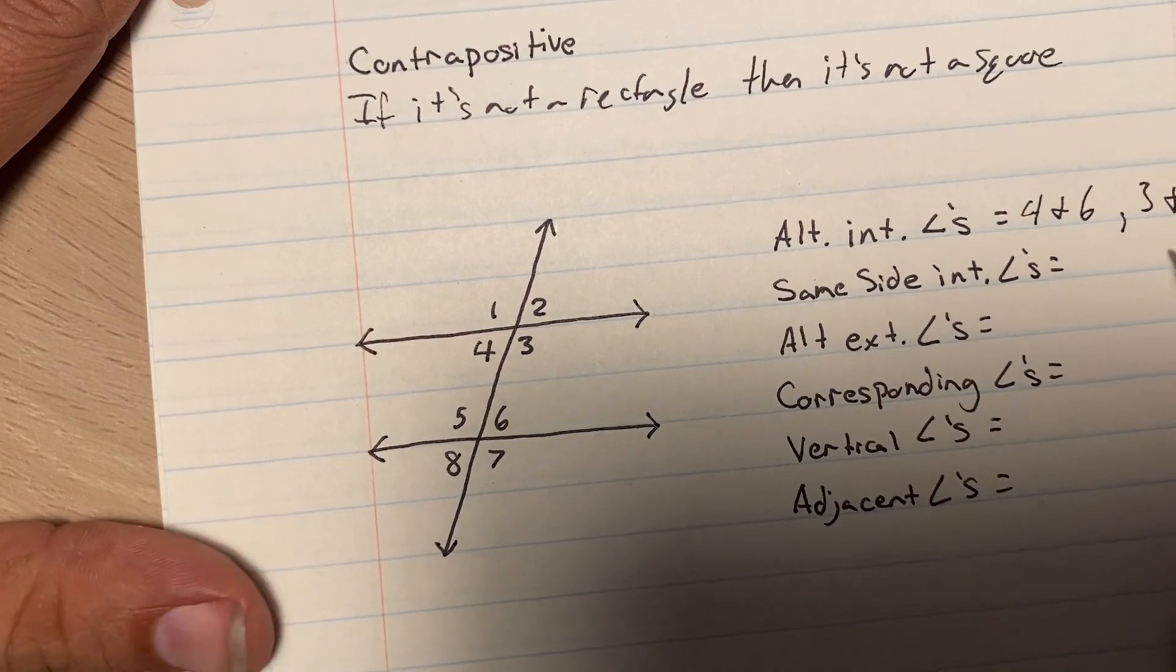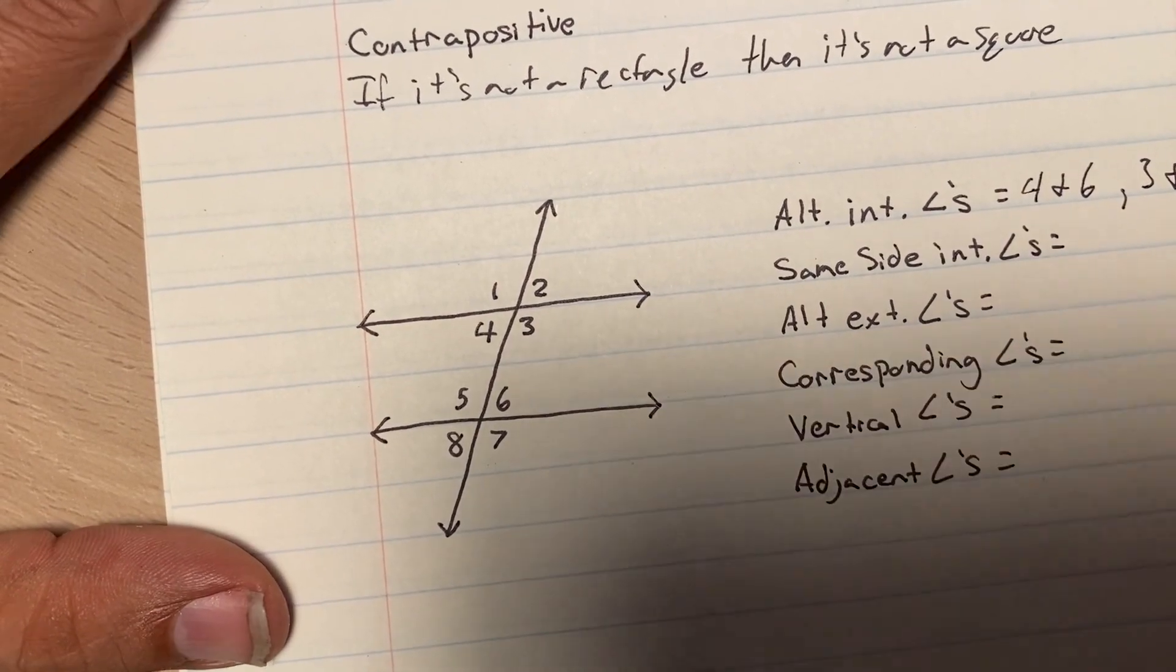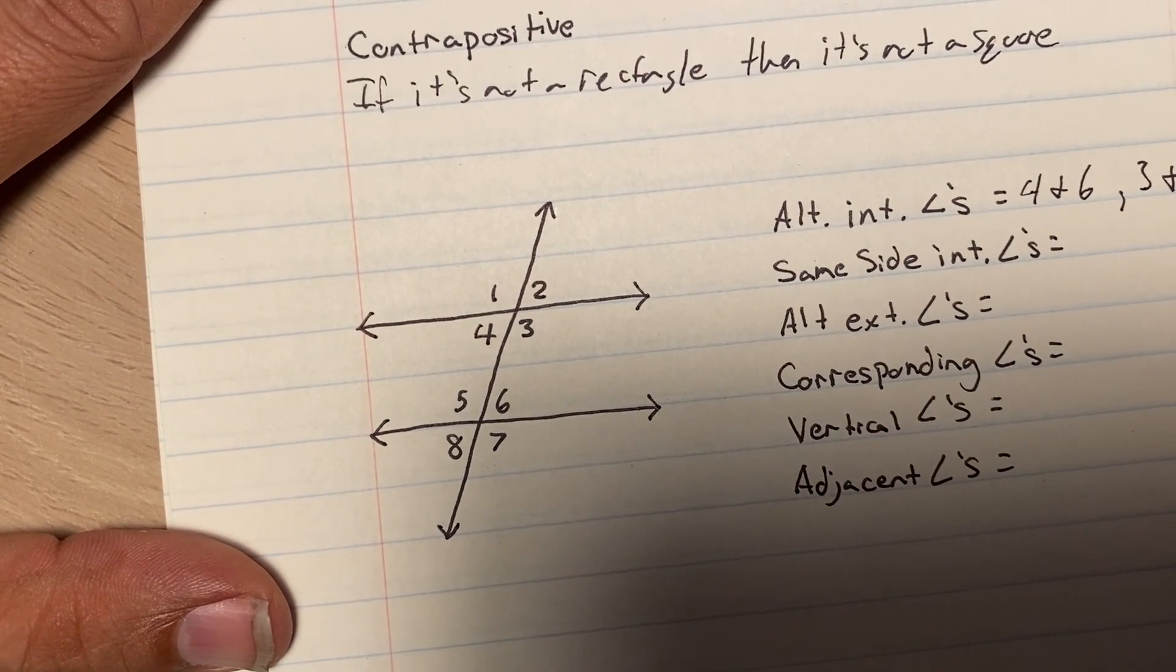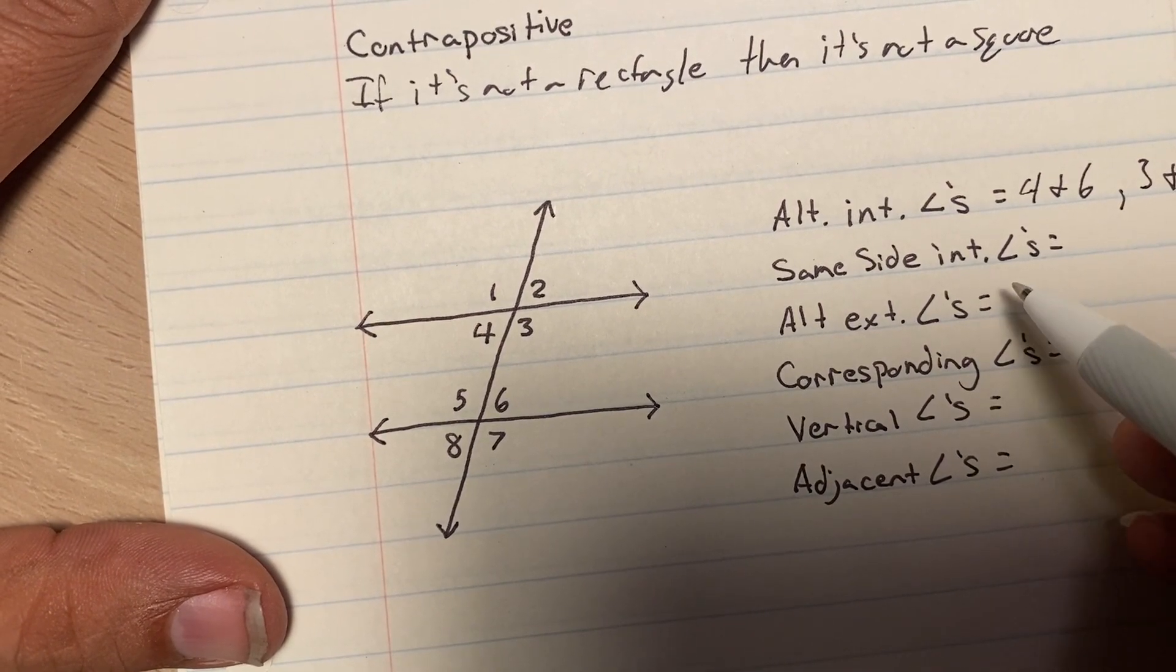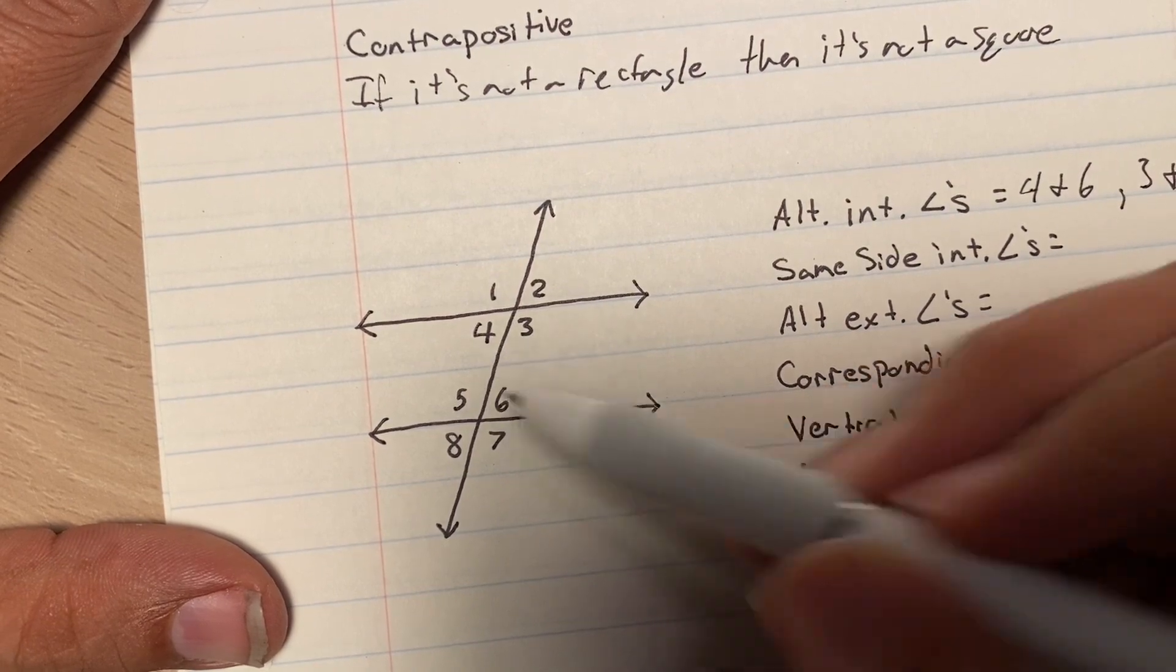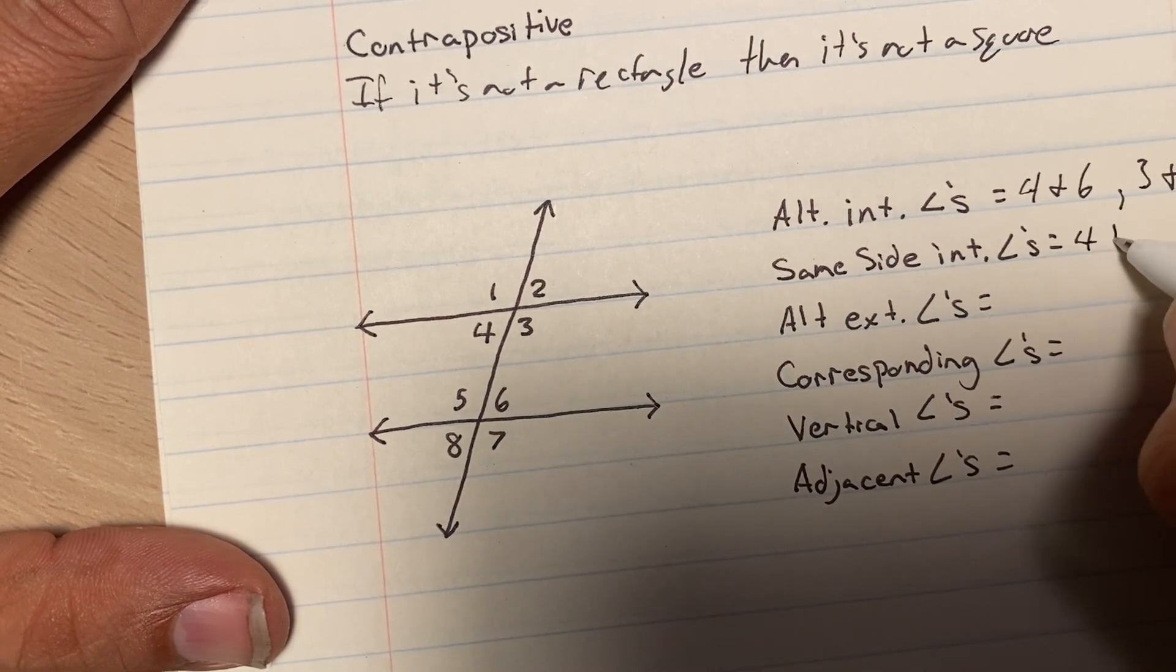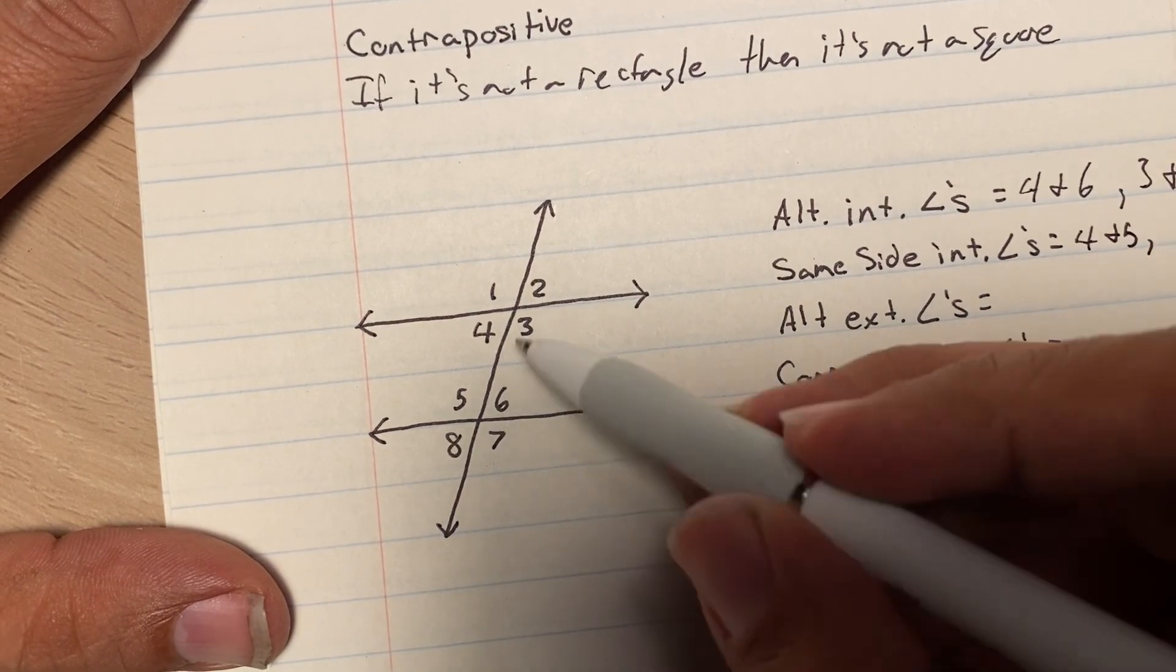These angles are congruent. Same side interior angles, same side interior angles, so 4, 5, and 3, 6 are considered same side interior angles.